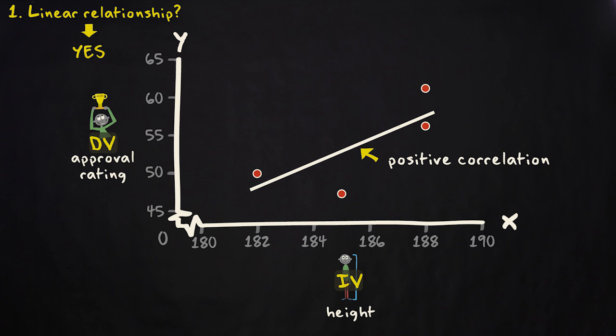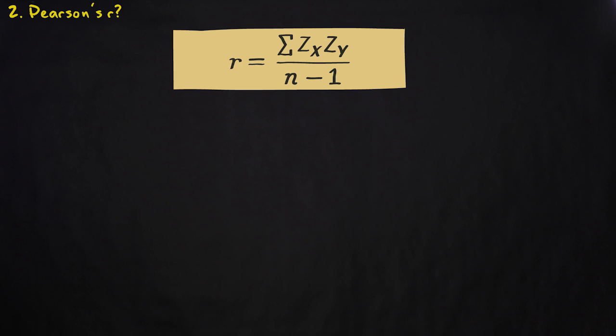The second question is what the value of Pearson's R is. To compute Pearson's R, we need this formula. To start with, we need to compute all the z-scores of both our independent and our dependent variable. To do that, we need the means and standard deviations of these variables. I assume that you know how to compute them, so I will just give them to you.